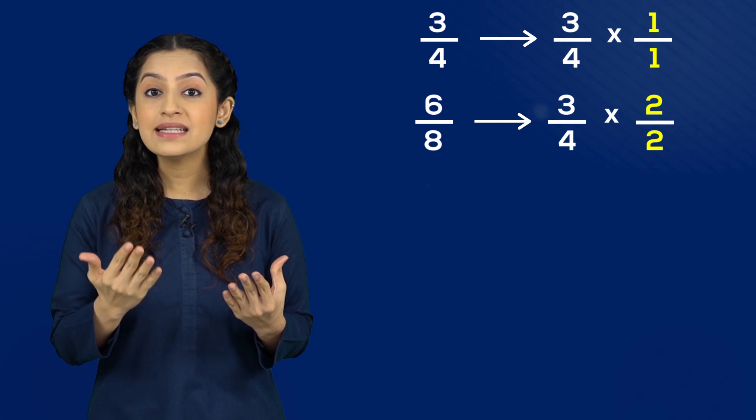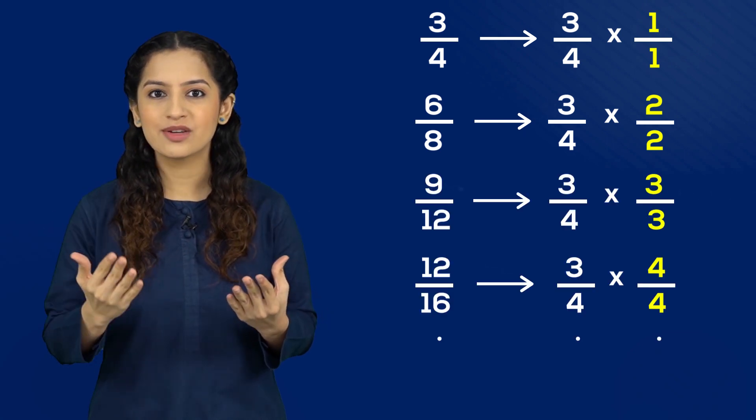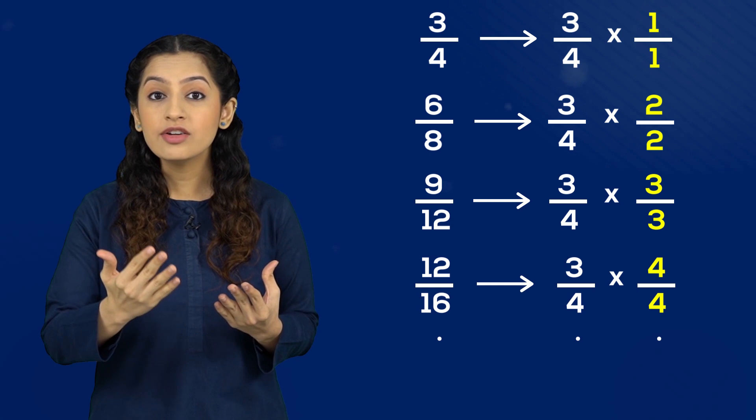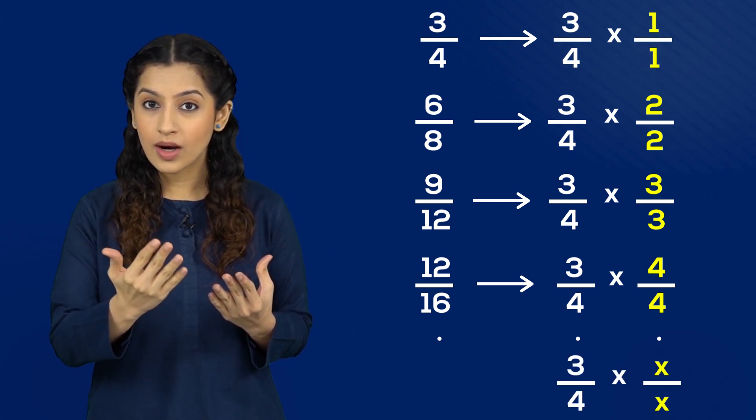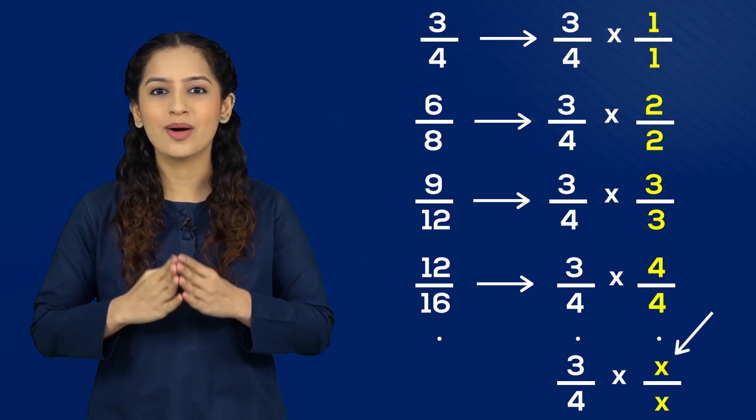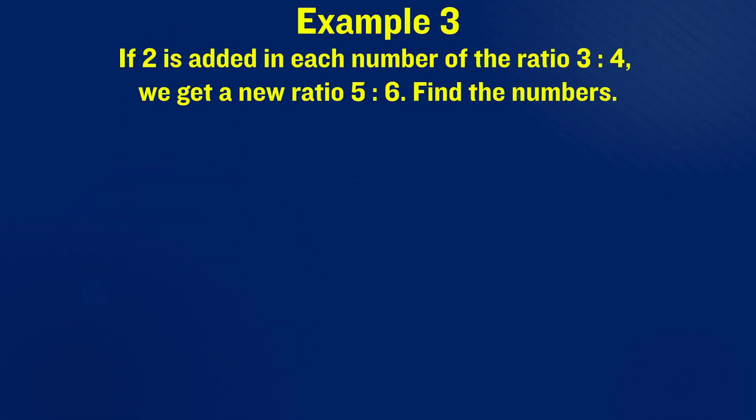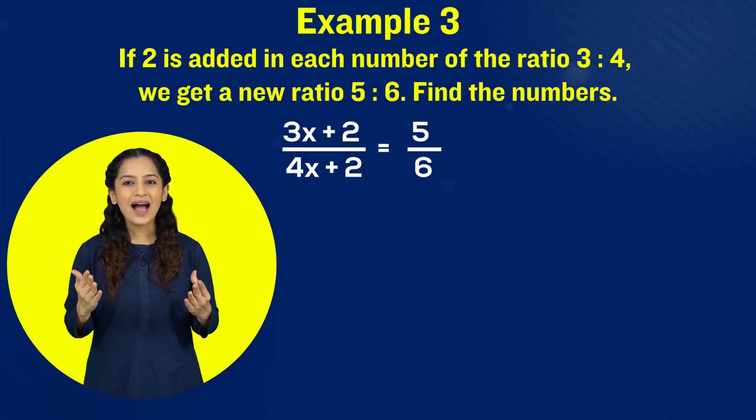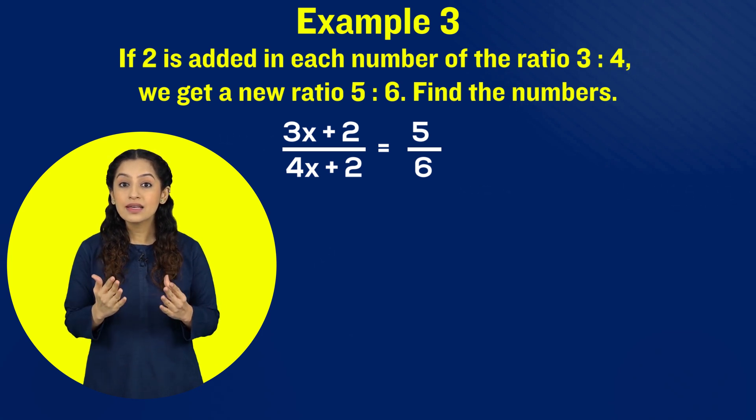What does that mean? 3:4 is representing the ratio of all those numbers that are multiples of it, or in general it is a ratio of 3x to 4x, where x can be any number that is the same for both the numerator and the denominator. Now the question is saying that if 2 is added in each number of the ratio 3:4, the result is a new ratio 5:6. After all this given information, the question asks us to find the values of those numbers which we'll call 3x and 4x.